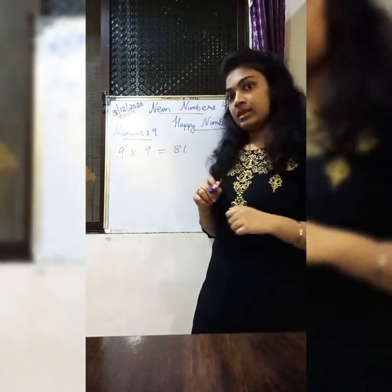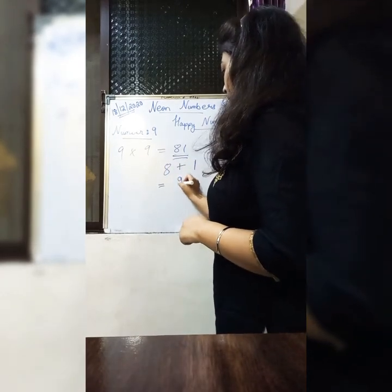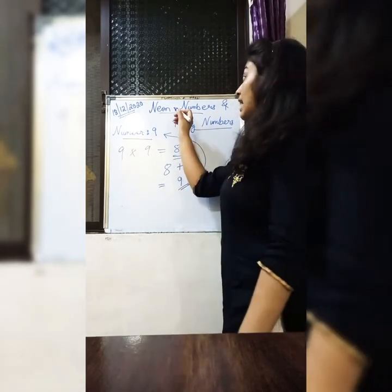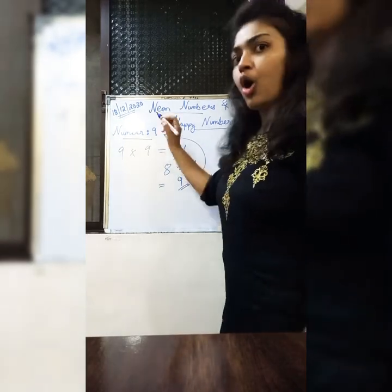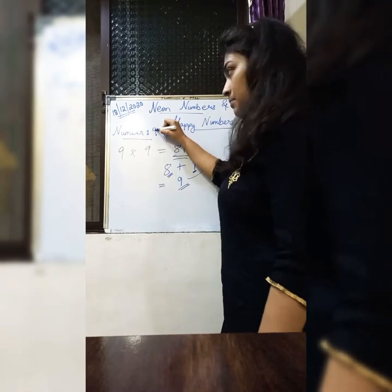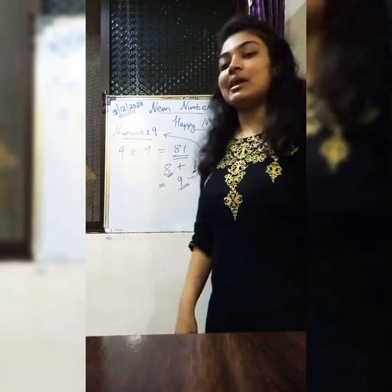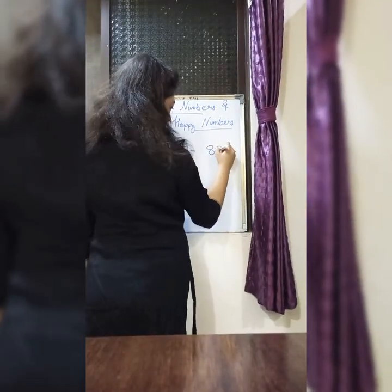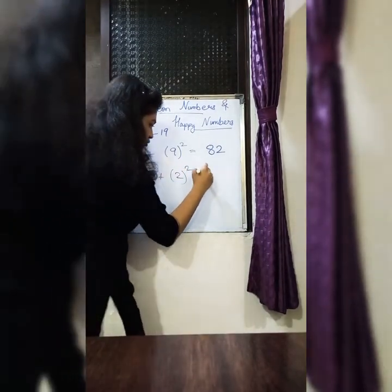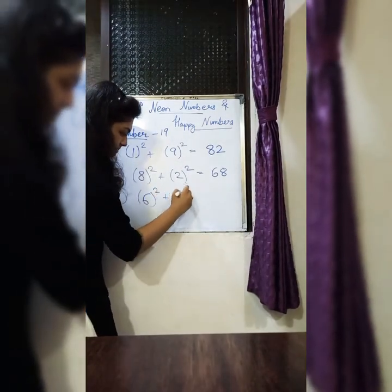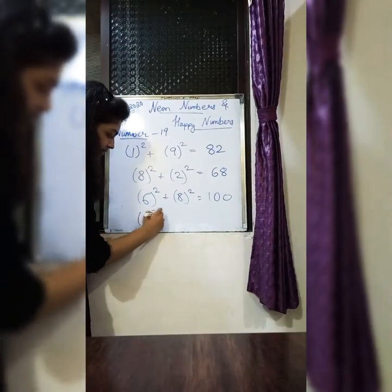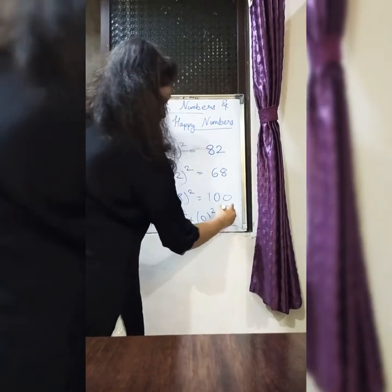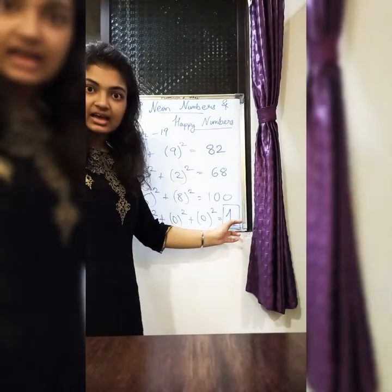Now let's look at neon numbers and happy numbers. The number considered here is 9. When I take the square of 9, I get 9 times 9, which is 81. When I add the digits — 8 plus 1 — I get back the number 9. Such numbers are called neon numbers: if the sum of the digits of the square of the given number equals the original number, it is a neon number. For happy numbers, let's take 90. The sum of the squares of the digits is 82, then taking squares again gives 68, and continuing this process, we eventually reach 1. The aim in happy numbers is to obtain 1 — if by doing this process we get 1 as the answer, then it is a happy number.